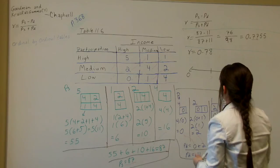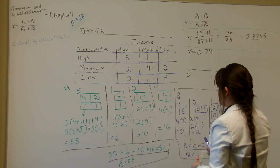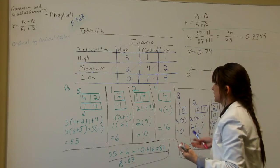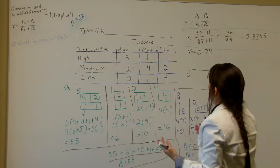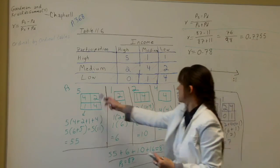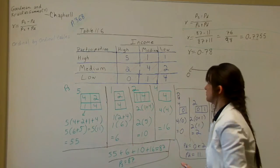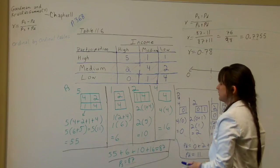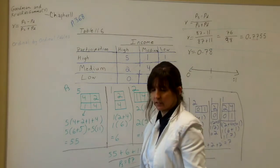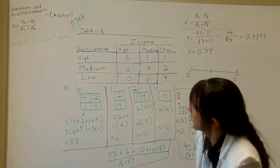So the gamma equals 0.78. This is how to calculate, how to work your own formula and how to come up with these subtable things they have in the book, how it works. This is Goodman and Kruskal's gamma.